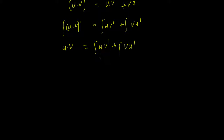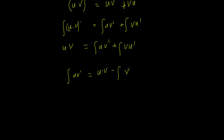So we can rearrange: the integral of u·v-derivative equals u times v minus the integral of v·u-derivative. And that really is the integration by parts formula.